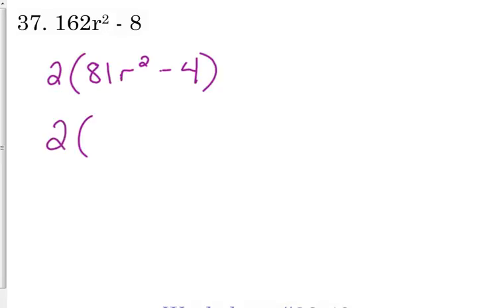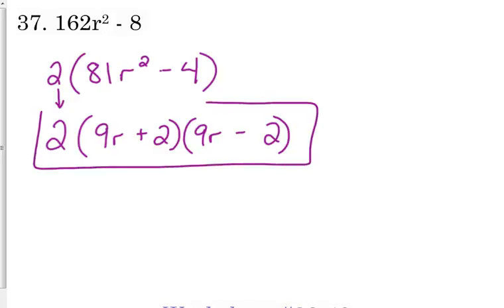So take out 2. We get 81R² - 4. 81 and 4 are perfect squares. Don't forget, and I don't think that I've really seen anybody in this class doing it, but I was just looking at what first period is doing, and don't forget to bring that GCF down. If you pull out a GCF, that number doesn't disappear. You've got to keep it coming all the way down through your problem. 9R times 9R is 81R², 2 times 2 is 4, one plus one minus. And that's it. So that's the first special case, difference of perfect squares.